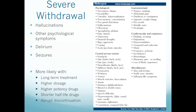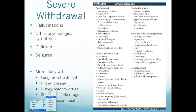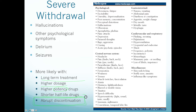Withdrawal can be minimized with a strict tapering protocol. Severe withdrawal is similar to delirium tremens and may include hallucinations and delirium. Severe withdrawal is more likely with long-term treatment, higher doses, higher potency drugs, shorter half-lives, and abrupt discontinuation. The most controllable factor is abrupt discontinuation, which can be prevented through tapering.